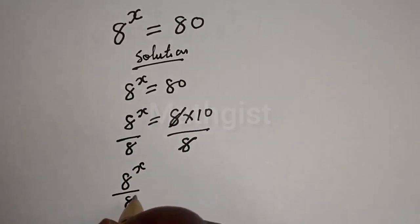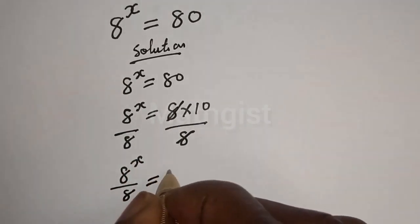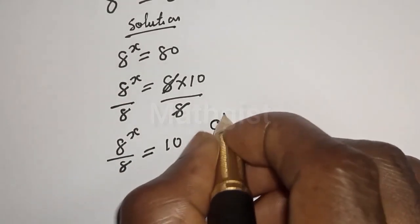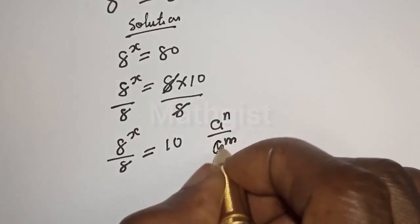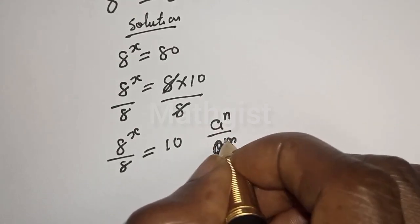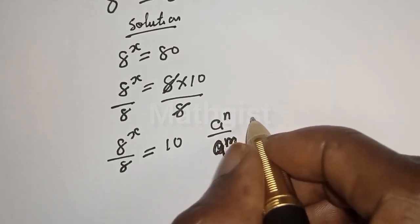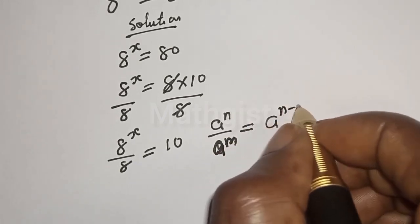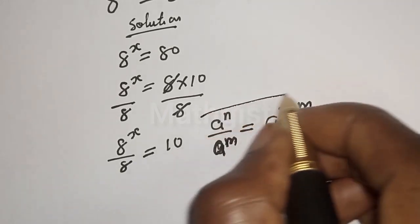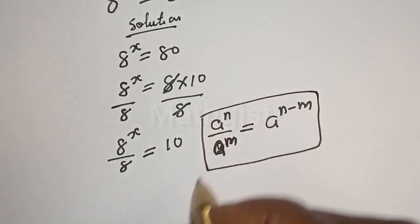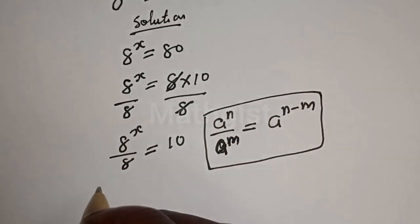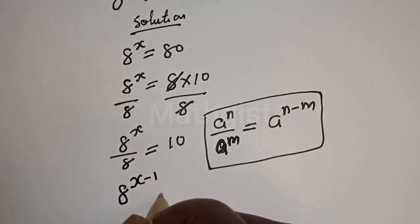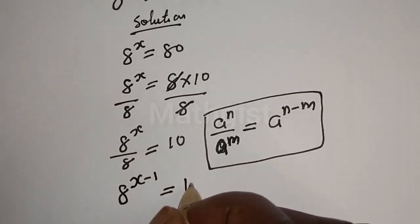So 8 raised to the power s over 8 is equal to 10. Take note that if you have a raised to the power n over a raised to the power m, this is equal to a raised to the power n minus m. So this becomes 8 raised to the power s minus 1 is equal to 10.